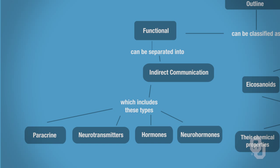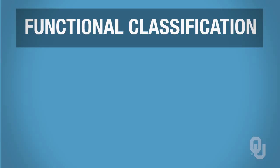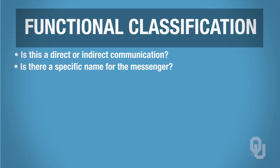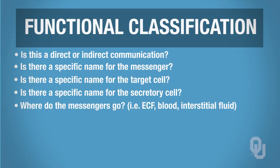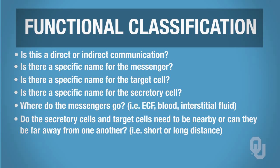With functional classification, you need to know: is this direct or indirect communication? You'll need to know specific names for the messenger, target cells, and the secretory cell. You'll also need to know where the messengers travel — only through interstitial fluid, only through the blood, or through both — and whether the secretory and target cells need to be nearby or far apart, meaning short-distance or long-distance communication.